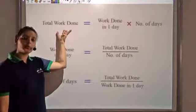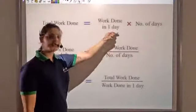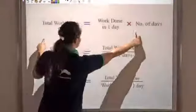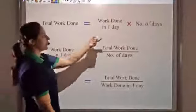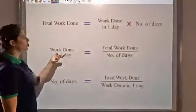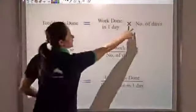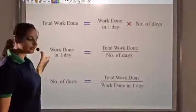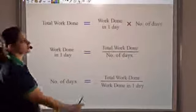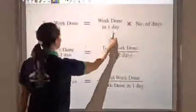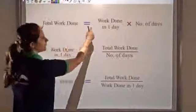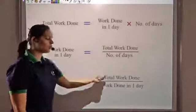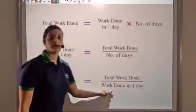Total work done is work done in a day multiplied by number of days. From this formula, work done in one day equals total work done divided by number of days. The third formula is: number of days equals total work done divided by work done in one day.